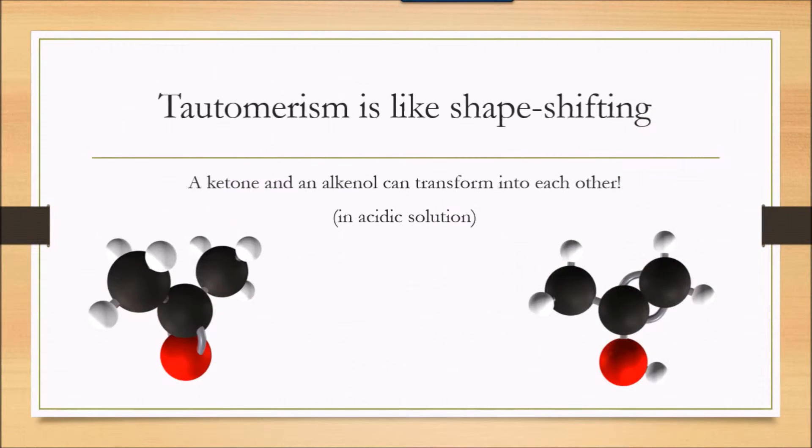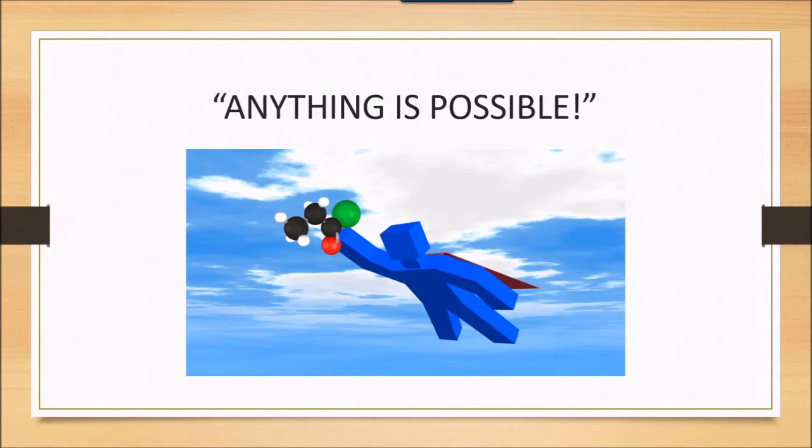So what exactly is keto-enol tautomerism? It's a situation where you have a ketone that can turn into an alkanol in solution, or the other way around. It's as if you have one molecule that can shapeshift between two different forms. Shapeshifting? That's ridiculous you might think. But remember, in chemistry, anything is possible.